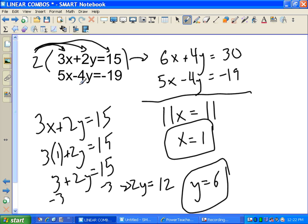3 times 1 plus 2y equals 15. 3 plus 2y equals 15. Subtract 3 from both sides. I'm left with 2y equals 12. Divide by 2, y equals 6. So x is 1, y equals 6. Real quick check up here. 5 times 1 is 5 minus 4 times 6 is 24. 5 minus 24 is indeed negative 19. Check, check, got it.